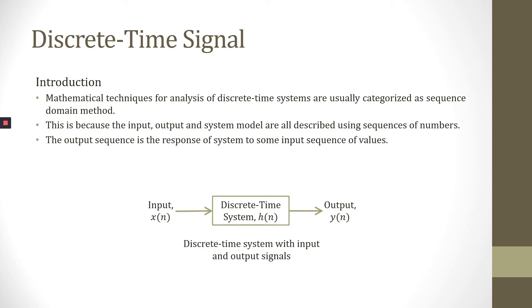The mathematical techniques for the analysis of linear time invariant systems for discrete time systems are usually classified as sequence domain method. It is because the input, output, and system model are all described by using sequences of numbers.